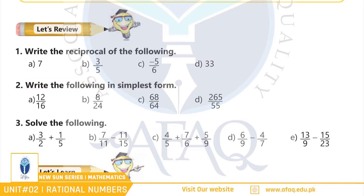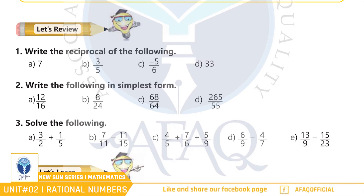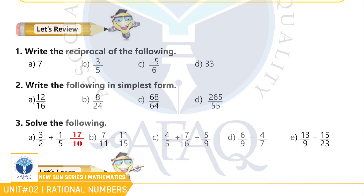Solve the following. Part A: 3 by 2 plus 1 by 5. Good. 17 by 10. اگلے سوال آپ نے خود کرنے ہیں.